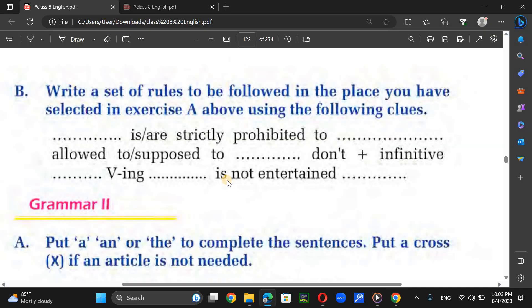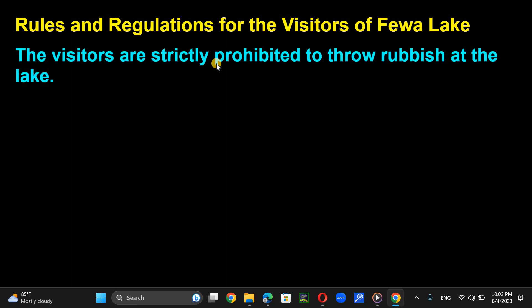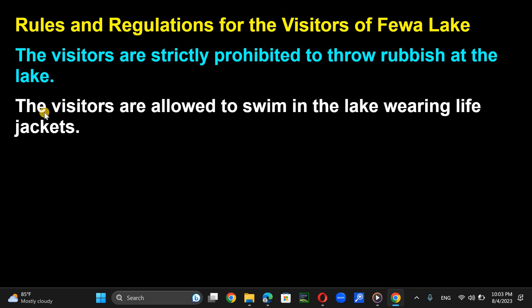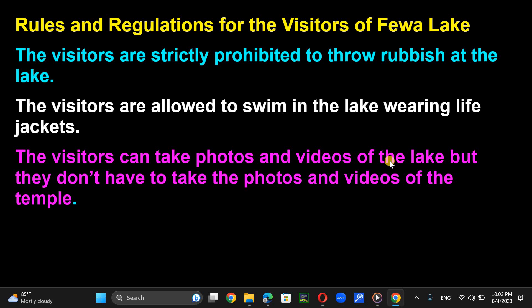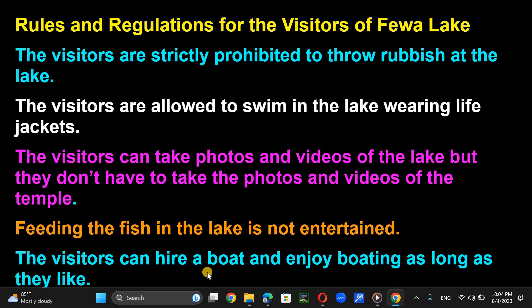Now write a set of rules to be followed in the place you selected. Here is a model: Rules and Regulations for Visitors of the Lake. Visitors are strictly prohibited to throw rubbish near the lake. Visitors are allowed to swim in the lake wearing life jackets. Visitors can take photos and videos of the lake but not inside the temple. Feeding fish in the lake is not allowed. Visitors can hire a boat and enjoy boating.